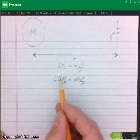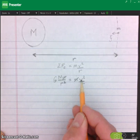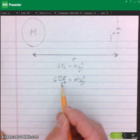We're left with the mass of the large object, the speed or velocity, and the radius of the orbit.